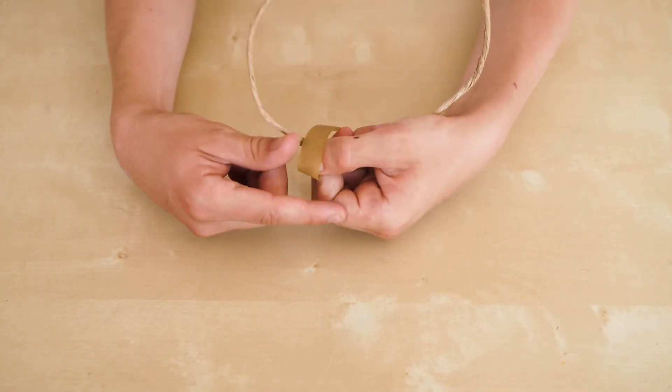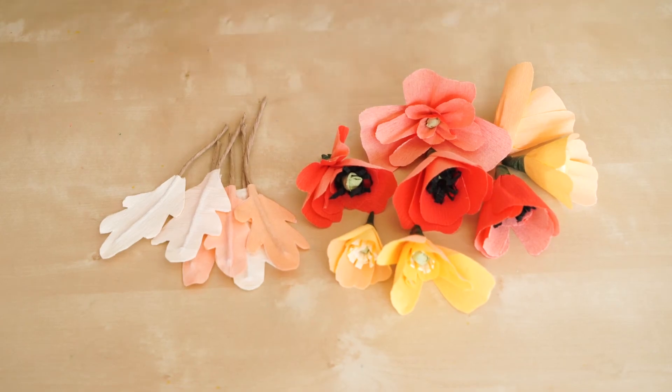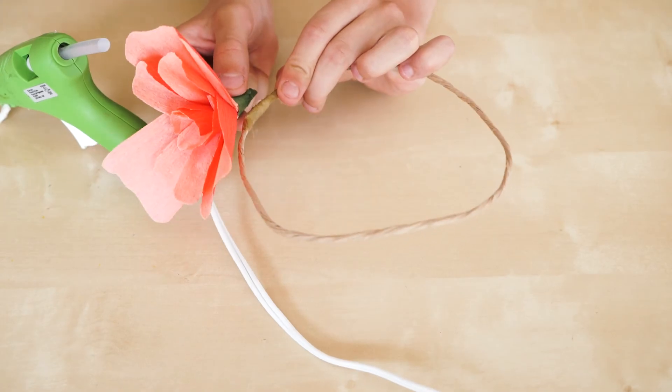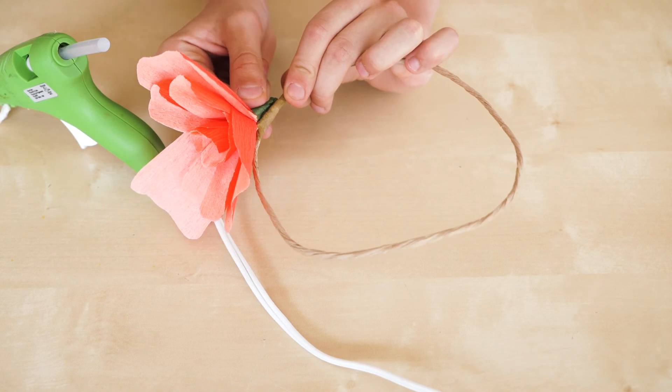Secure the ends with floral tape. Now that we have several blooms and leaves, it's time to attach them on. Put a dab of glue on your crown. Secure it with floral tape.